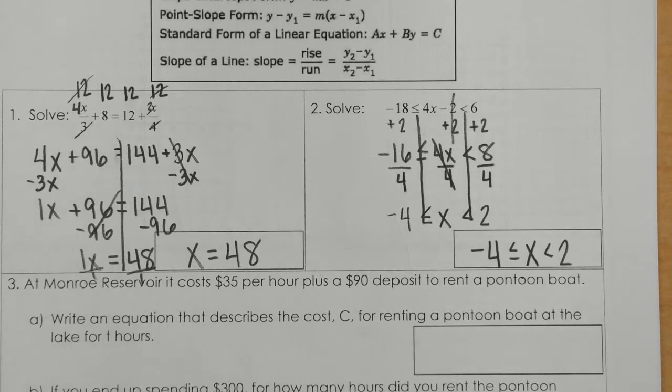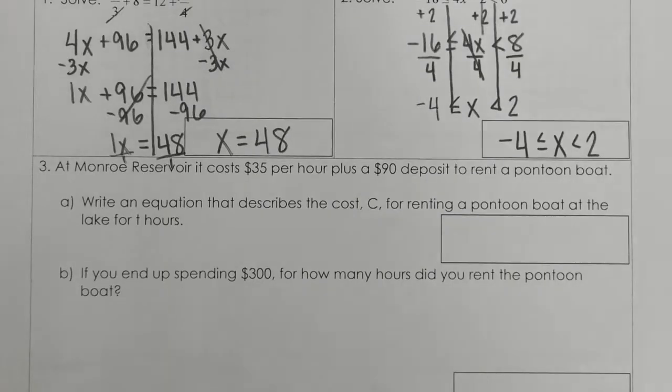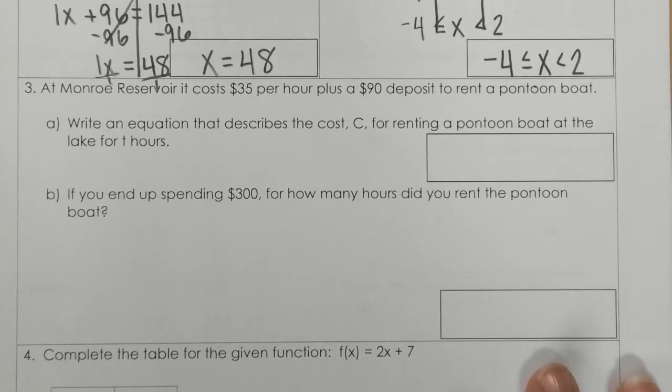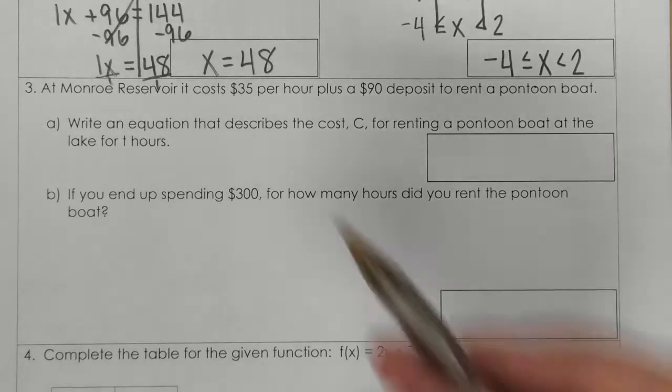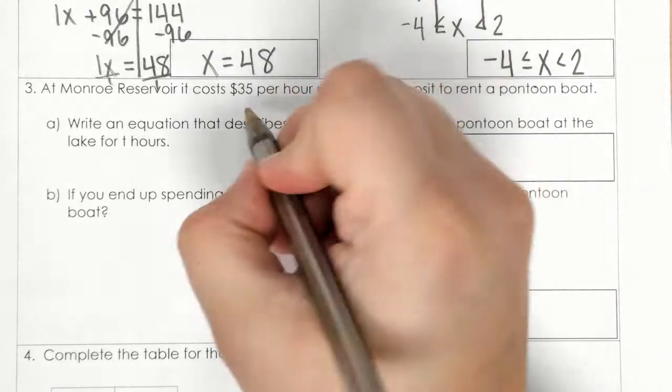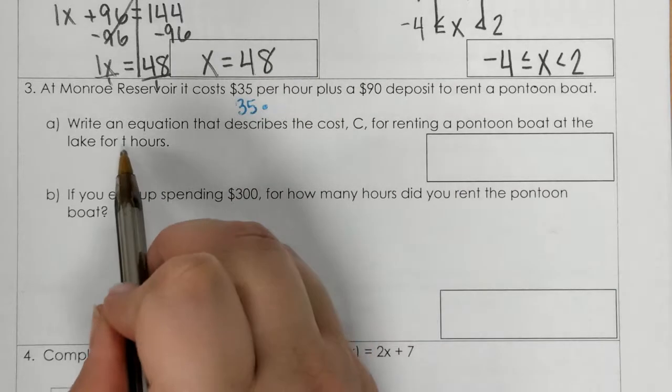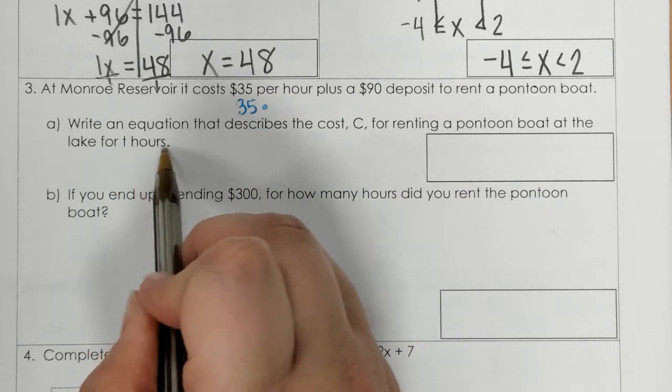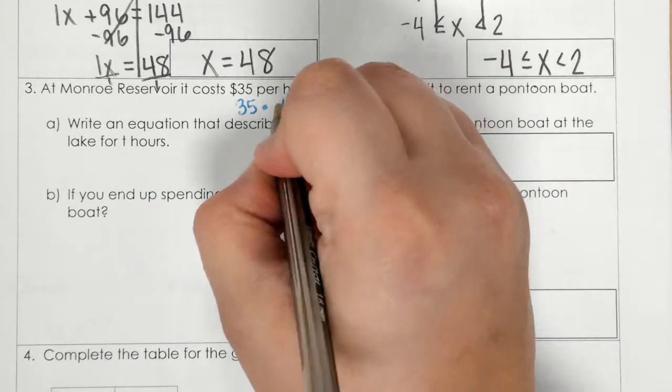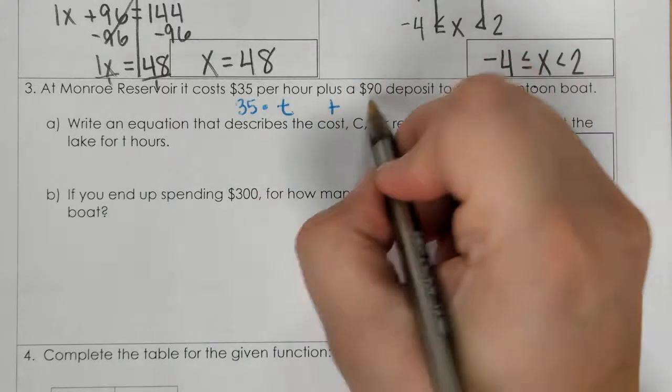Alright, and number 3, this is the Monroe Reservoir boat problem. So it costs $35 per hour, plus $90 deposit to rent a pontoon boat. I want you to understand that 'per' right there means times, so 35 times hours, which they said down here, use t for hours. So times t,